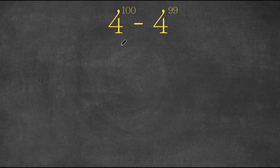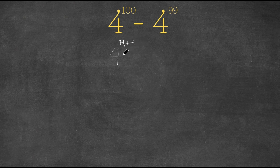So what we're first going to do is we're going to rewrite 4 to the power of 100 as 4 to the power of 99 plus 1. All we did was we changed 100 to 99 plus 1, and that is true. And we're going to keep the 4 to the power of 99 as is.